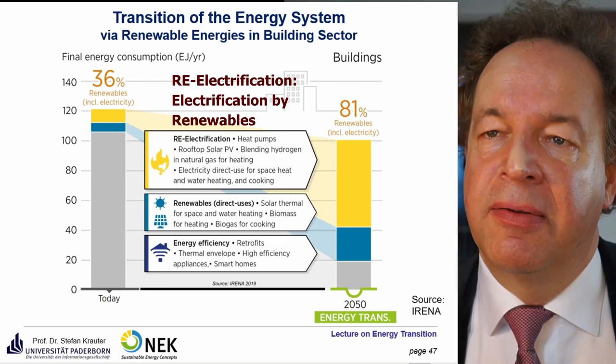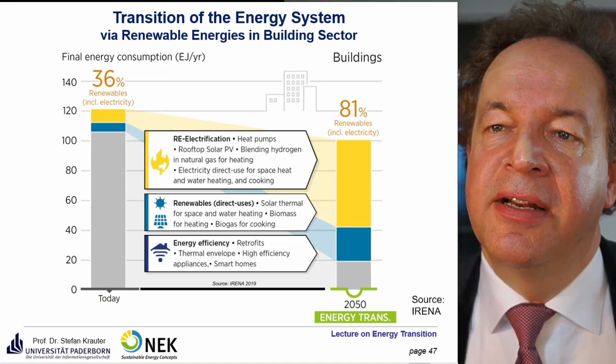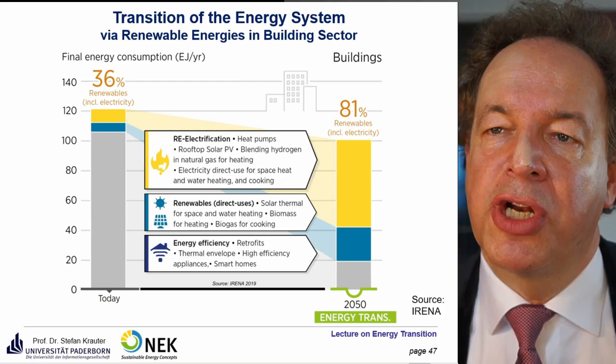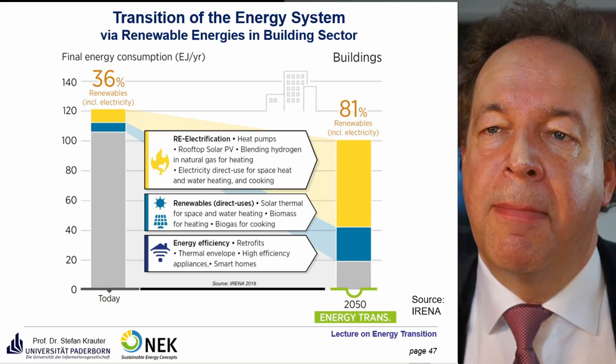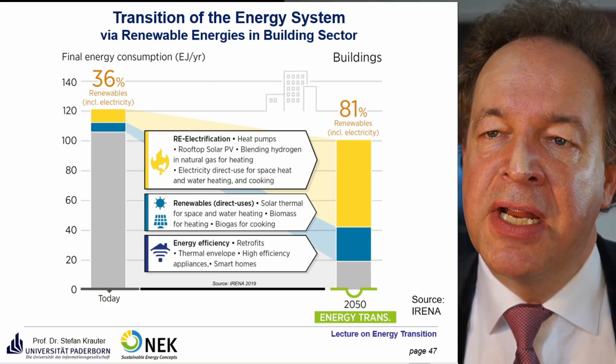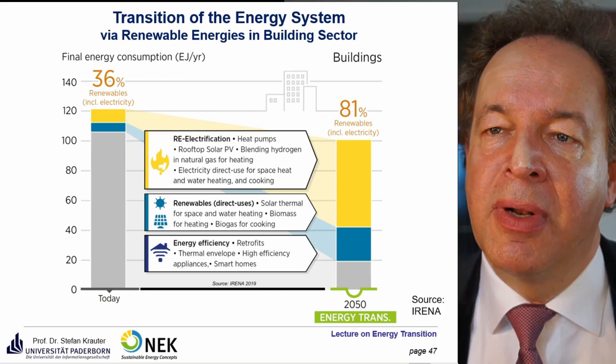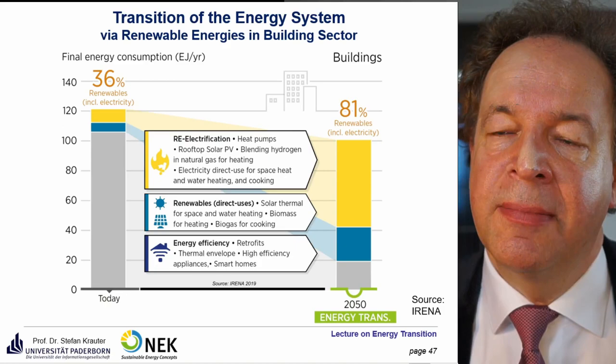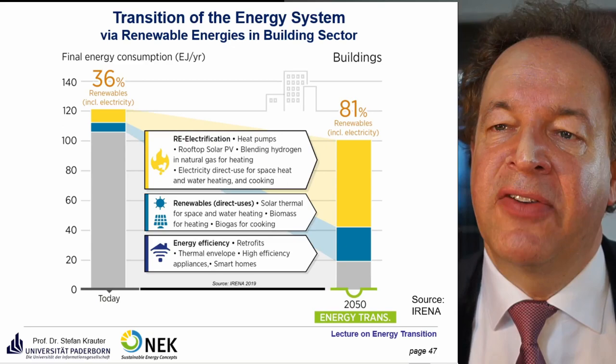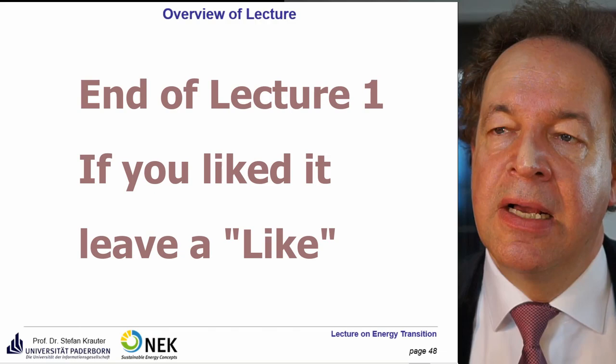In the building sector, options include re-electrification via heat pumps, solar rooftop PV, blending hydrogen in natural gas for heating, direct electricity use for space heating, water heating, and cooking — though heat pumps are more efficient. Direct renewables include solar thermal and biomass. Energy efficiency improvements come from retrofitting the thermal envelope, installing high efficiency appliances, and using smart home technologies.